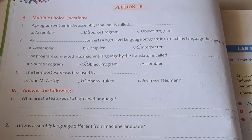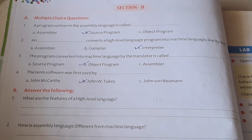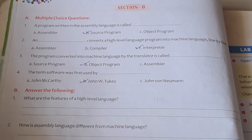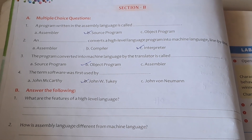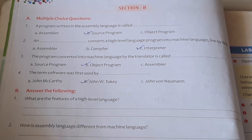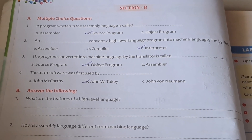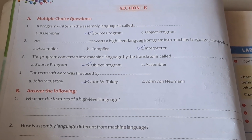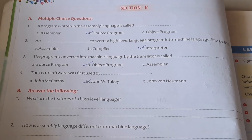Multiple choice questions. First one: A program written in the assembly language is called dash. Options: Assembler, Source program, Object program. Answer is Source program.